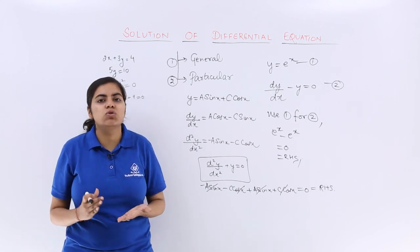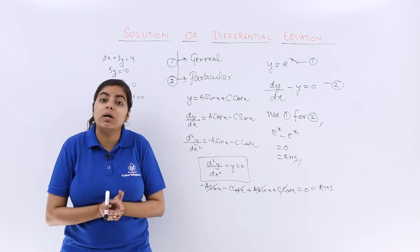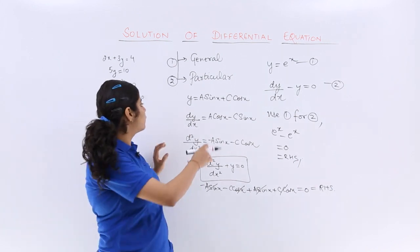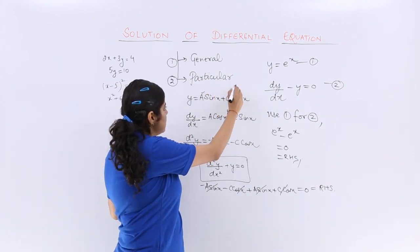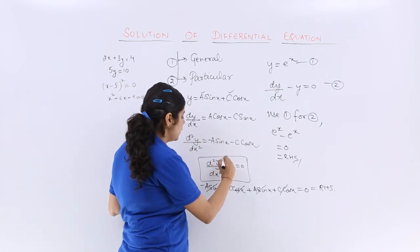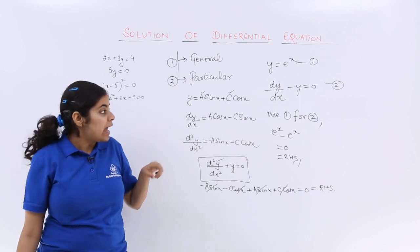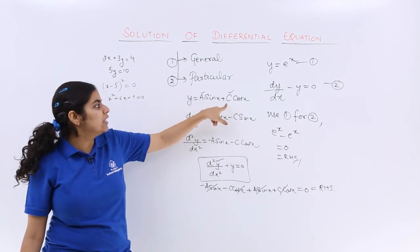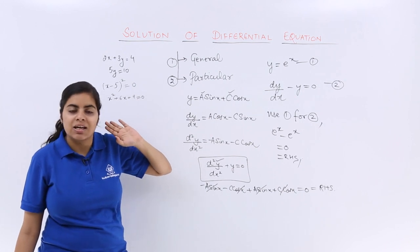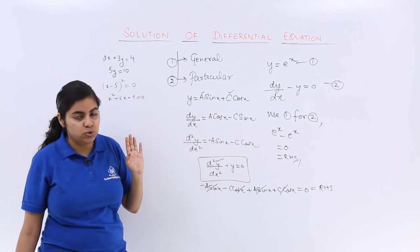But what kind of a solution is this? A general solution, because the number of constants were a and c, which were two arbitrary constants. The order of the differential equation is also 2, and there is no particular value assigned to these arbitrary constants. So this is the general solution.